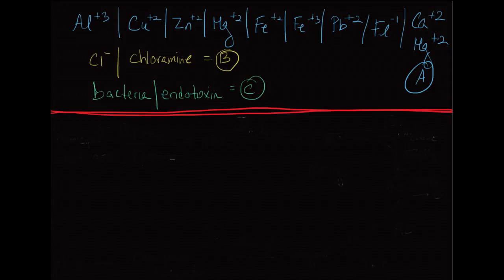We pretty much discussed all of these in the first part of the tutorial, so we'll go through this section very quickly. In blue, I've listed all of the common cations and anions that you find in municipal water, and I've labeled all of them as capital A in blue.